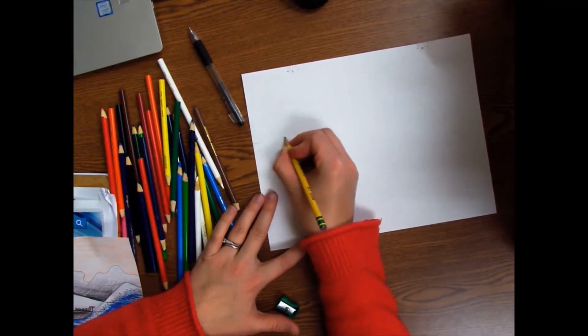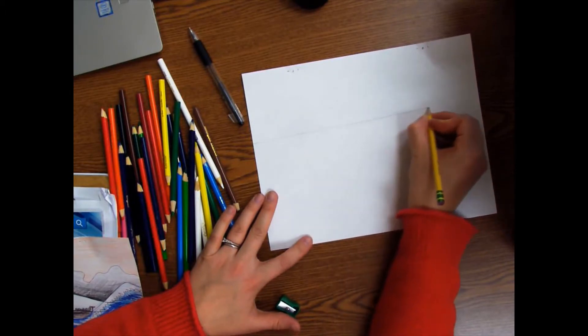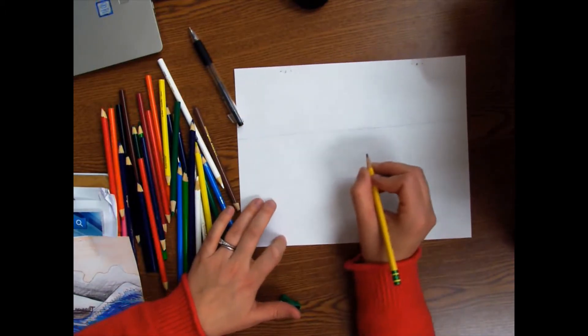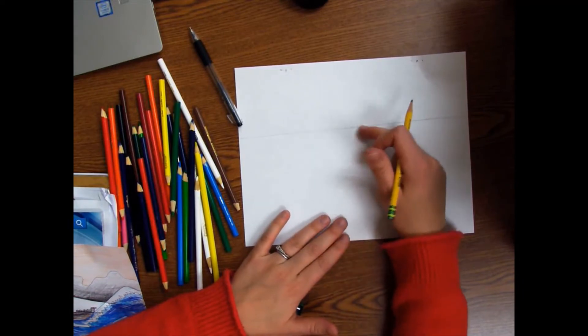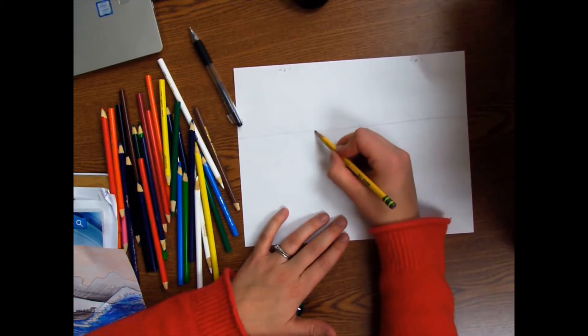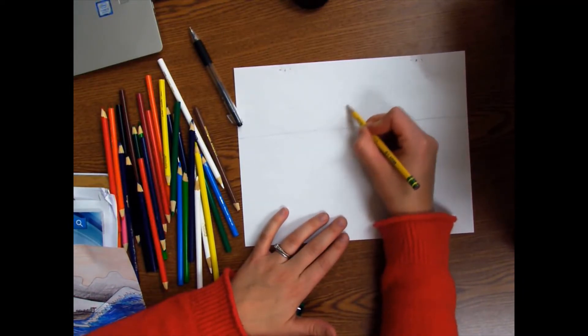The first thing we're going to do is draw a horizon line, so we're going to draw lightly with our pencil our horizon line about two-thirds from the bottom or one-third from the top. And we're going to add our mountain, Mount Fuji.